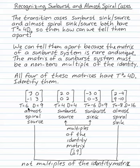So in the first case, trace is 6, the eigenvalues are both positive, both positive 3, and this must be an almost spiral source.